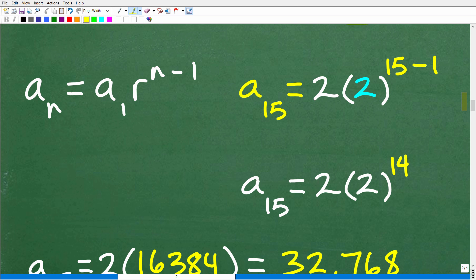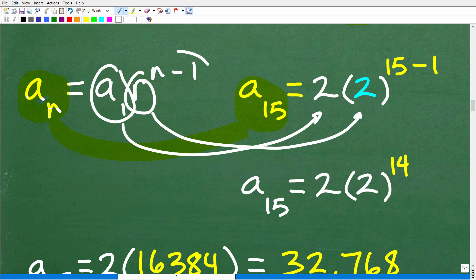Let's set this problem up. We want to find the 15th term of this geometric sequence, a sub 15. We know the first term is 2. We know r is also 2, and we're going to take that to the n minus 1. n is 15. So this would be n minus 1 or 15 minus 1. So a sub 15 is going to be equal to 2 times 2 to the 15 minus 1 power.